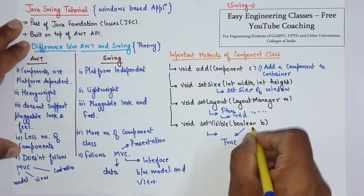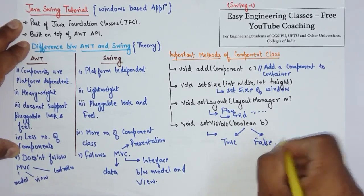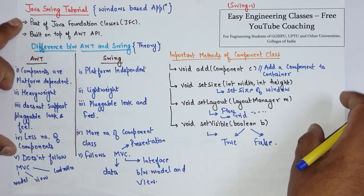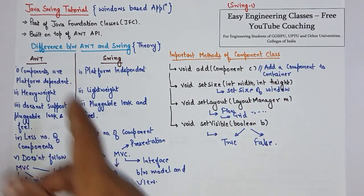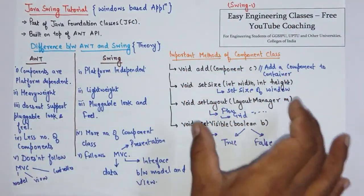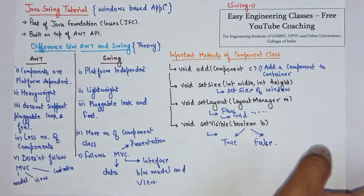And to make it disappear you have to set it false. So this is the basic introduction of Java Swing, the difference between AWT and Swing, and some of the important methods of component class which are exactly similar to the AWT package.